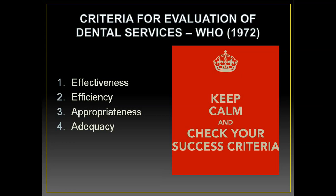Efficiency refers to whether the manpower and materials — the resources we use — are being used efficiently. For instance, we cannot use a filling material that will fail in one week for a permanent tooth; materials must be efficient and based on requirements. Effectiveness refers to whether our program was effective in meeting its objectives — effective programs will definitely meet their objectives. These are the four WHO criteria used to evaluate any program.